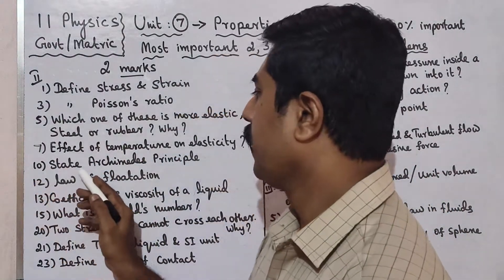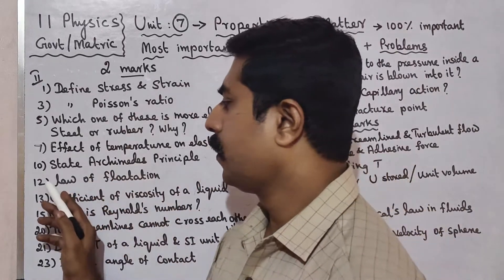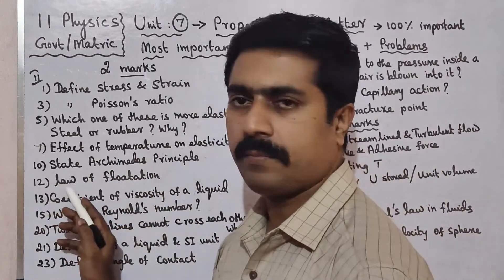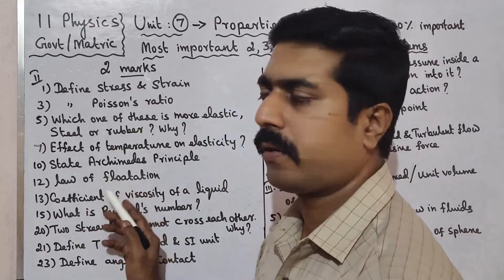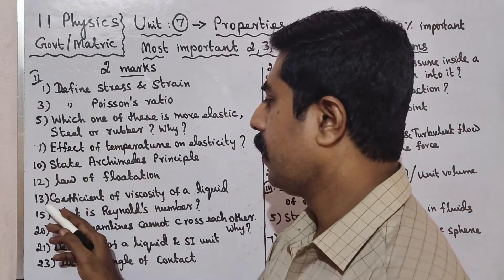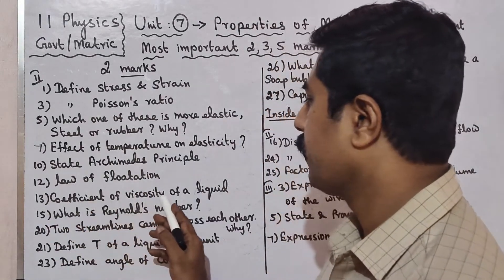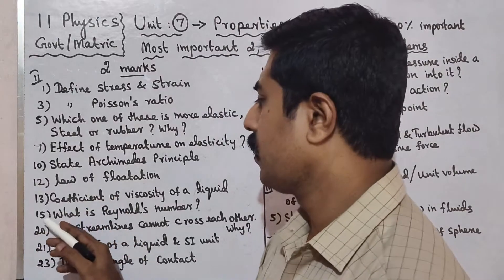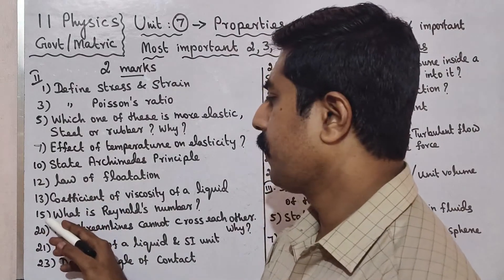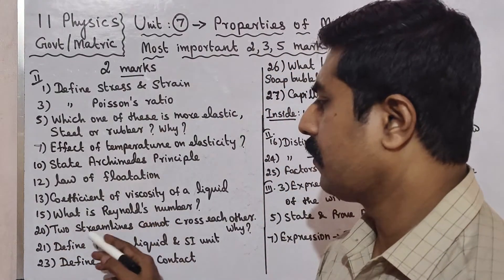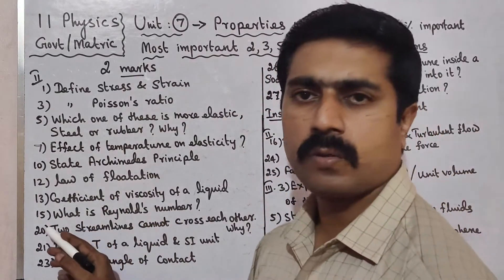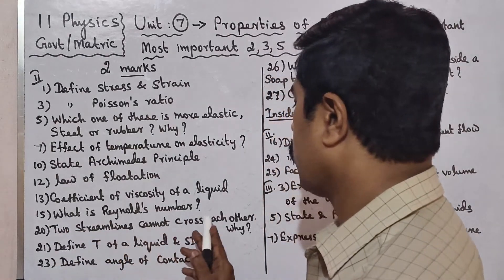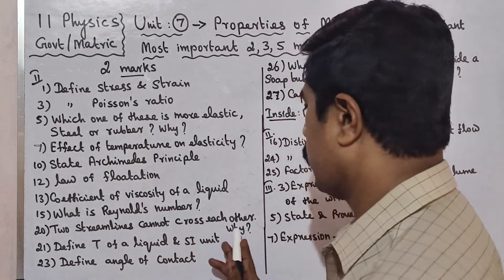Archimedes' Principle; Law of Flotation; Coefficient of Viscosity of a Liquid; What is Reynolds number? Two streamlines cannot cross each other — Why?